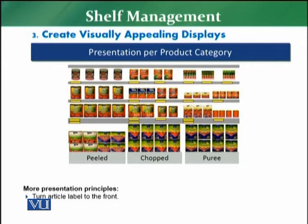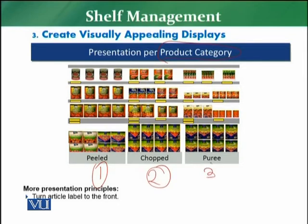Creating visually appealing displays has two aspects. The first is presenting the product as per the product category. For example, with tomatoes: the first category is peeled tomatoes, the second is chopped tomatoes, and the third is puree. When product categories are properly defined, it really helps the customer identify what he is looking for.